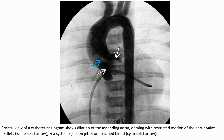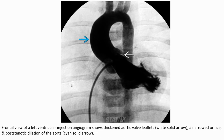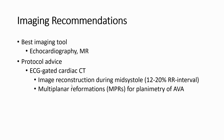Frontal view of catheter angiography shows dilatation of the ascending aorta, doming with restricted motion of the aortic valve, and systolic ejection. Frontal view of left ventricular injection shows a seeking aortic valve, leaflet narrowing, restricted orifice, and post-stenotic dilatation of the aorta — frontal view diagnostics for aortic stenosis.